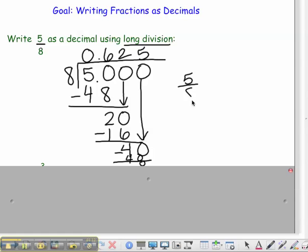So, 5 eighths as a decimal is equal to 0 and 625 thousandths.